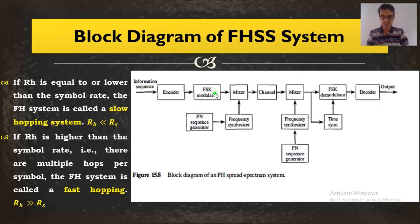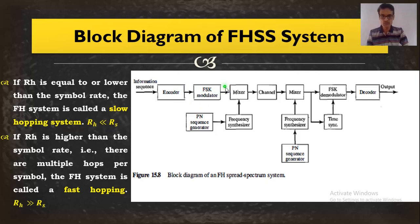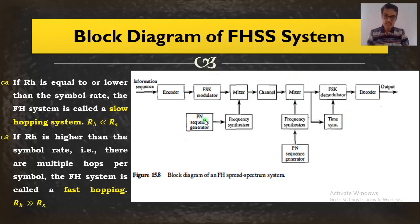This is the block diagram of a frequency hopping spread spectrum system. I have an information sequence going to a channel encoder for error detection and correction, then an FSK modulator — maybe M-ray FSK or binary FSK. So information sequences are modulated using M-ray FSK initially. For example, with M equal to 4 and groups of two bits: 00 maps to f1, 01 to f2, 10 to f3, 11 to f4. The output is given to a mixer whose other input comes from the PN sequence generator, which feeds a frequency synthesizer. The PN sequence generator output is a group of bits given to the frequency synthesizer.